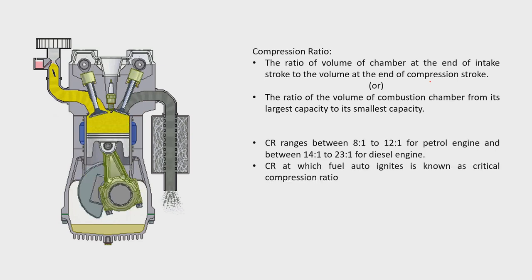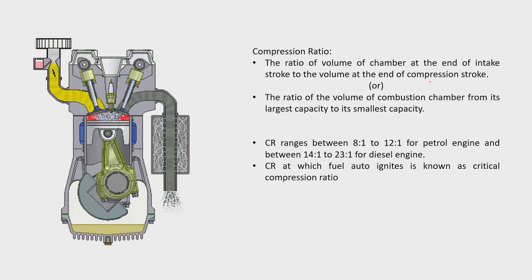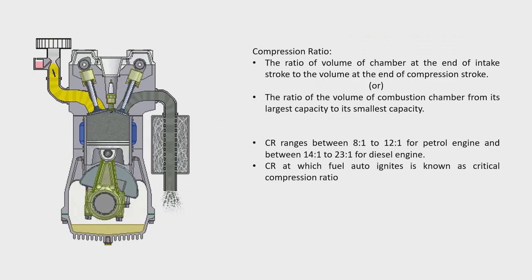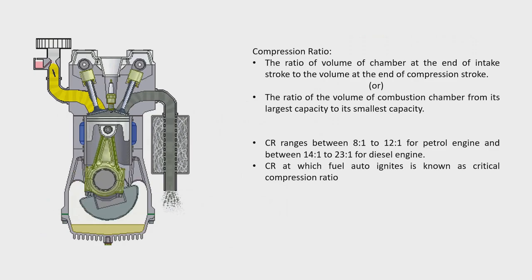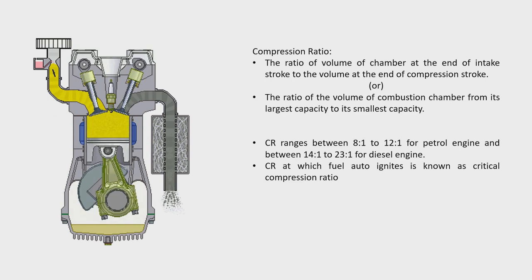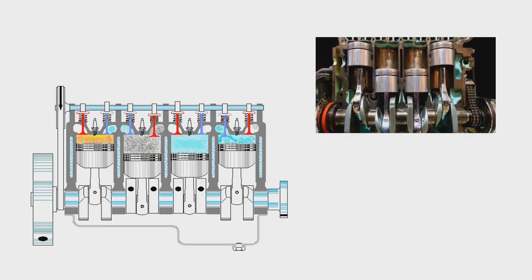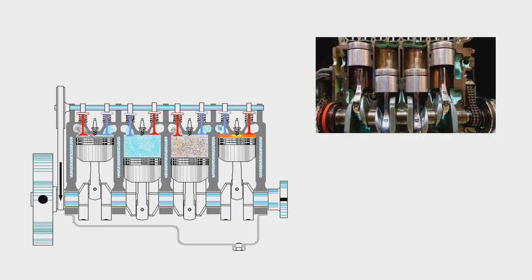The compression ratio (CR) ranges from 8:1 to 12:1 for petrol engines, and from 14:1 to 23:1 for diesel engines. I also talked about the critical compression ratio, which will lead to knocking of the engine.